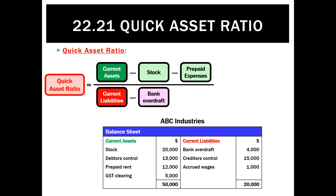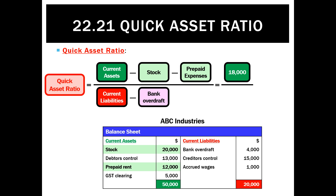Looking at a more detailed example — one that actually does have a bank overdraft. Let's say this is ABC Industries. We take its current assets of 50,000, minus the stock and the prepaid rent of 20,000 and 12,000, which equals 18,000 in total between debtors and GST. Underneath, we take current liabilities of 20,000, get rid of the bank overdraft of 4,000, leaving 16,000. In this case it's a bit tighter — a ratio of 1.13 to 1.